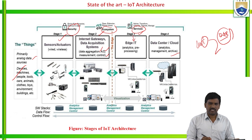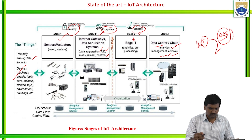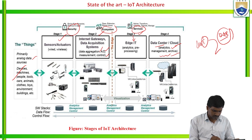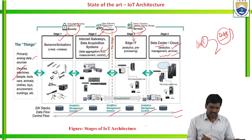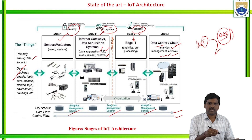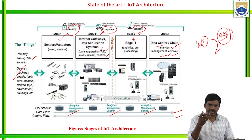Stage three is edge information technology, which handles analytics and pre-processing units. Before processing, we verify with pre-processing models. Stage four has data centers and clouds for analytics, management, and services. Stage one has sensors and actuators as input devices. Stage two processes information from associated devices to the internet. Stage three provides analytics and pre-processing, and stage four stores data in data centers.